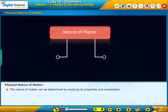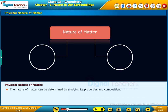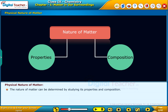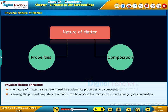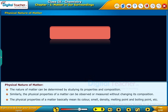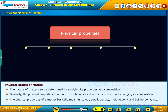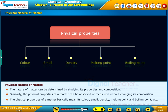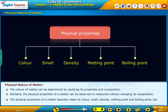The nature of matter can be determined by studying its properties and composition. The physical properties of a matter can be observed or measured without changing its composition. The physical properties of matter basically mean its color, smell, density, melting point and boiling point, etc.